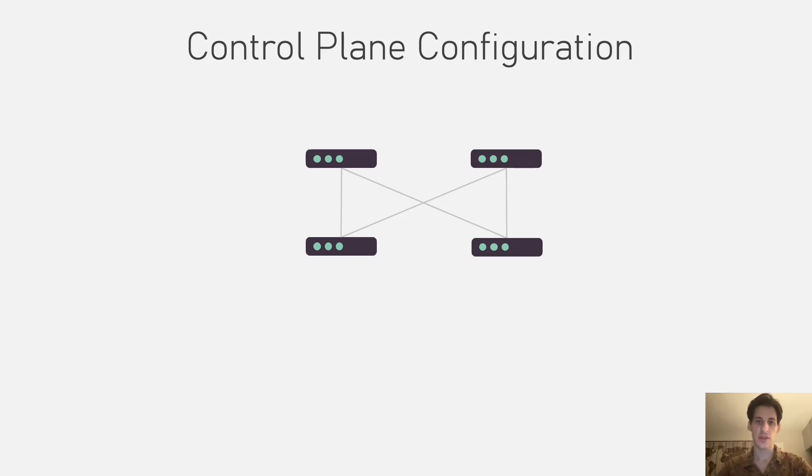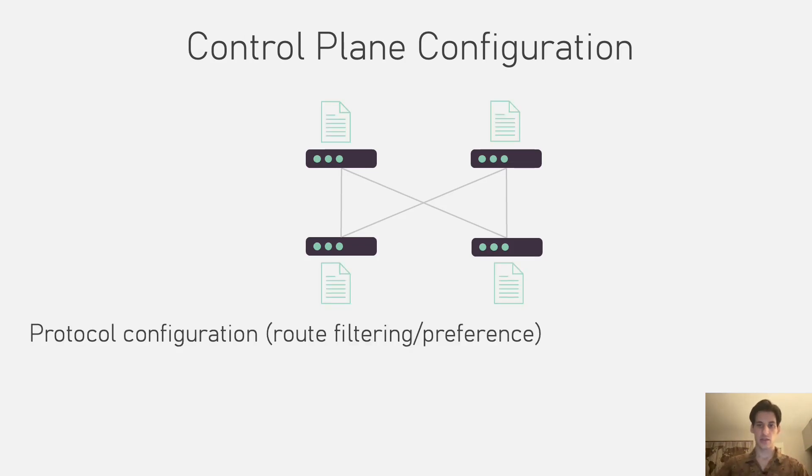The control plane of the network is a distributed system that computes the paths over which hosts connected to the network can exchange traffic. Network engineers issue a configuration for each switch in the network, describing which routing protocol should be used, setting the policy of the network, whether that is filtering some routes or setting path preferences.